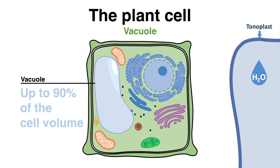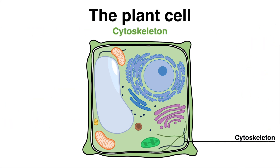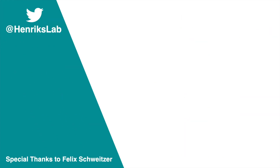Last but not least, one should mention the cytoskeleton. In plants, the cytoskeleton is mainly composed of microtubules and actin filaments. The cytoskeleton contributes to the cell's shape and to the organization and movement of organelles inside. This was a brief and simplified overview of a typical plant cell. If you are curious how an animal cell is structured, you may check out the linked video. Please like the video if it was helpful and don't forget to subscribe to the channel.